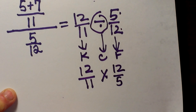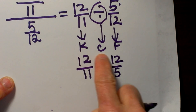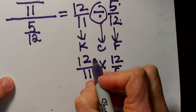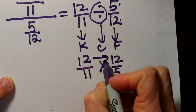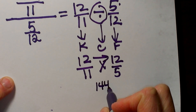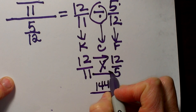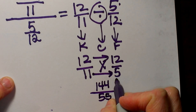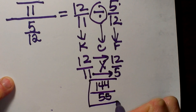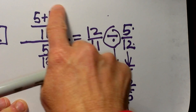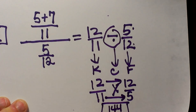And now we just multiply. To multiply fractions you multiply straight across. So we take 12 times 12, which is 144, over 11 times 5, which is 55. Our answer is 144 over 55 — and that looks much easier than the double stack we started with.